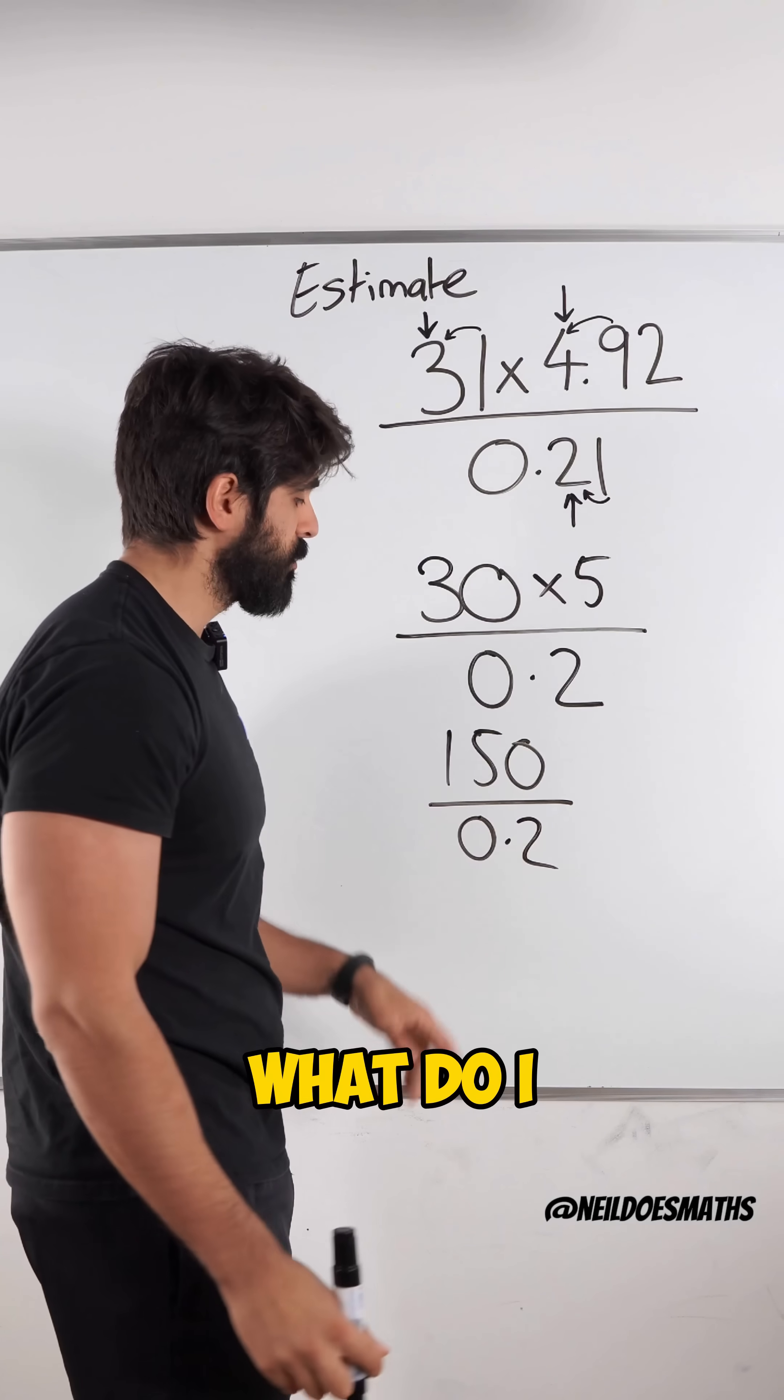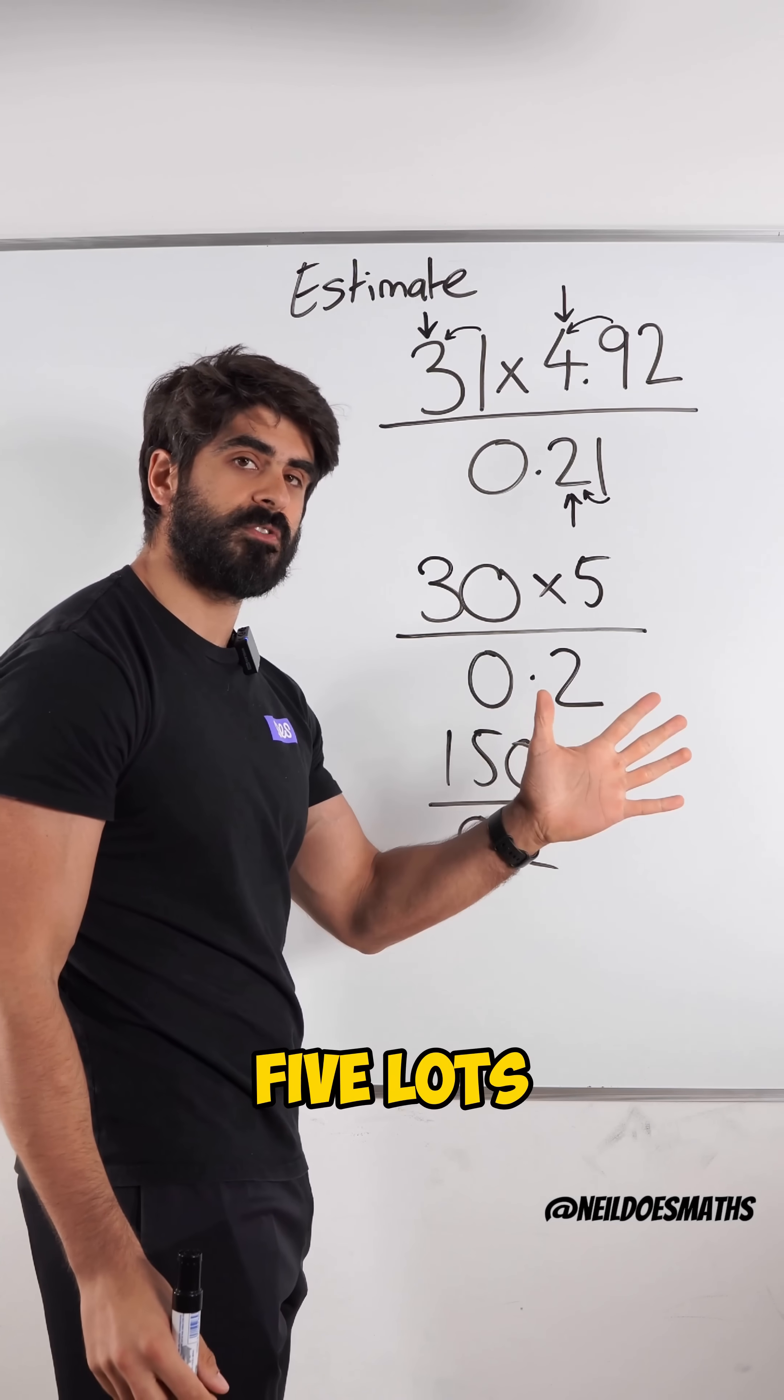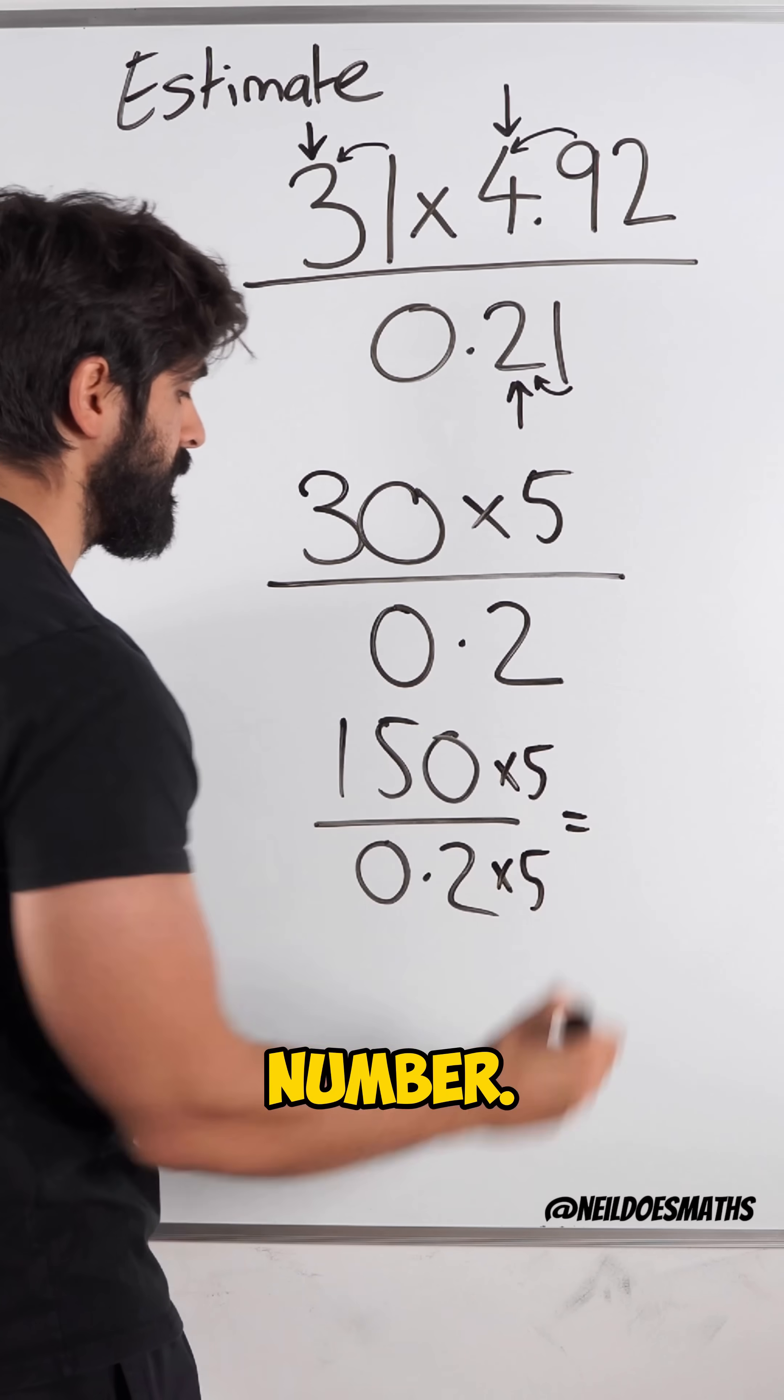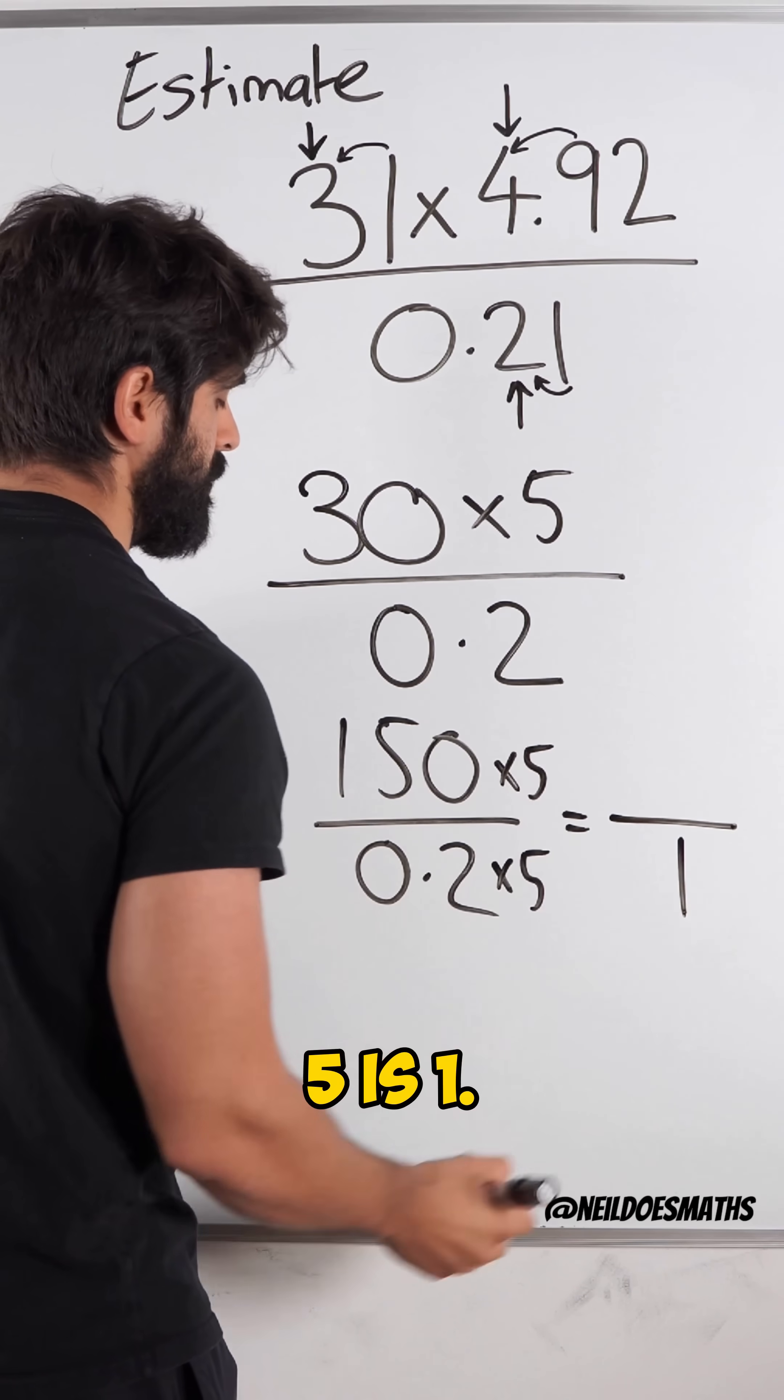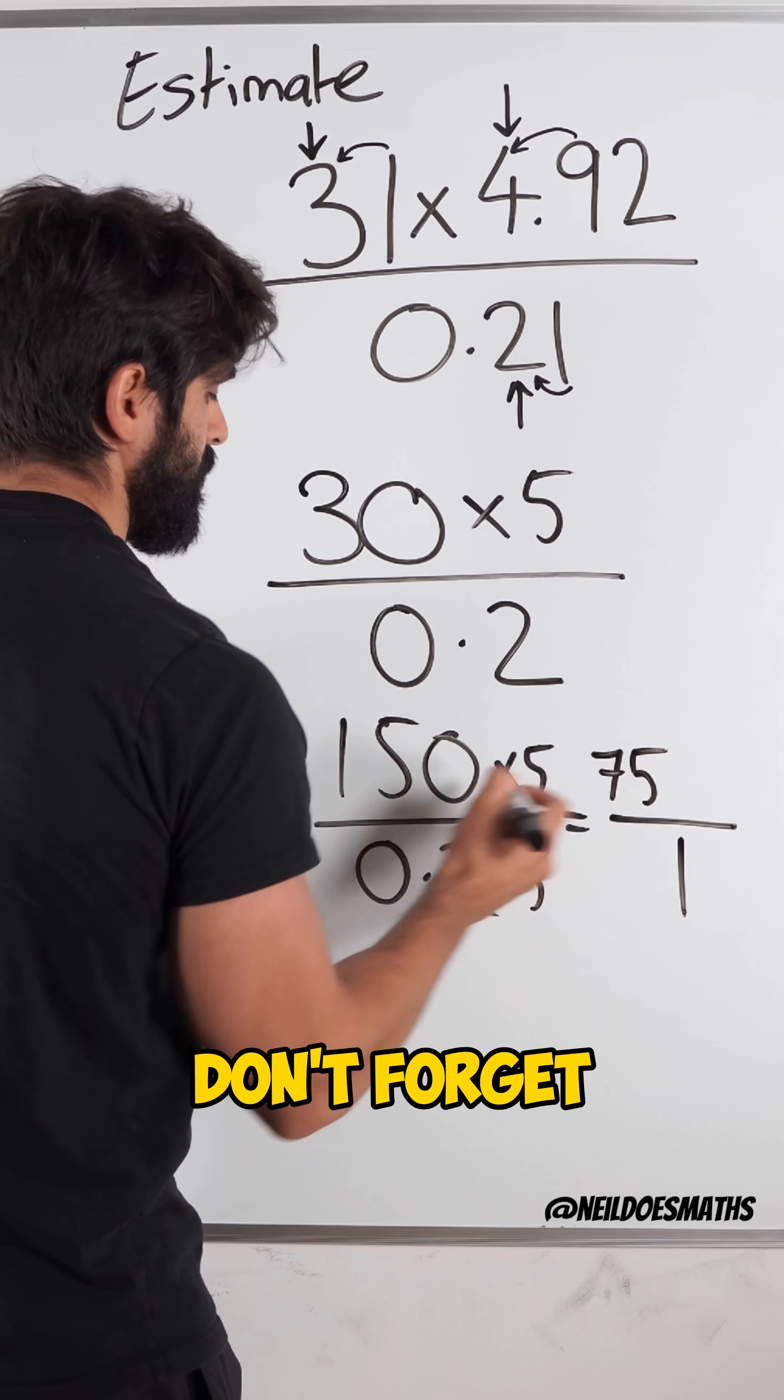We don't like dividing by decimals. What do I need to times 0.2 by to make it a whole number? Well I know 5 lots of 0.2 make 1. So we need to times the top and the bottom by the same number. 0.2 times 5 is 1. 150 times 5, well 15 times 5 is 75. Don't forget that extra 0.